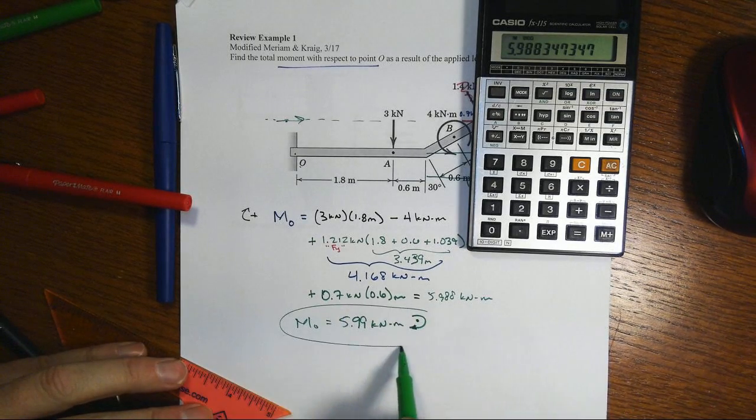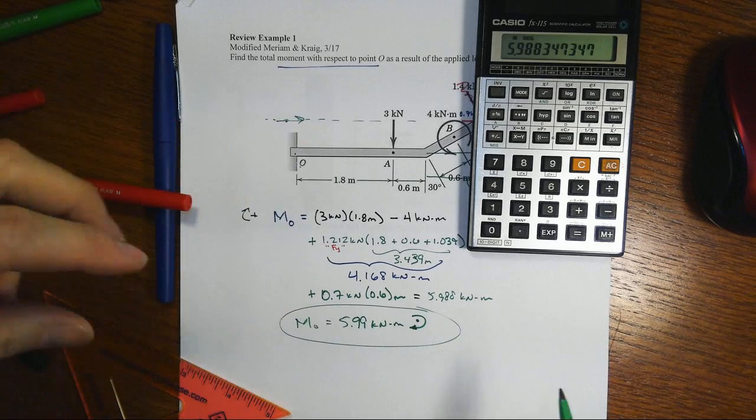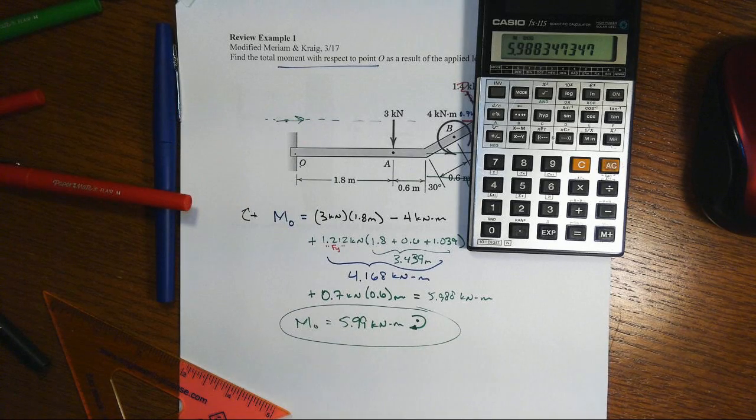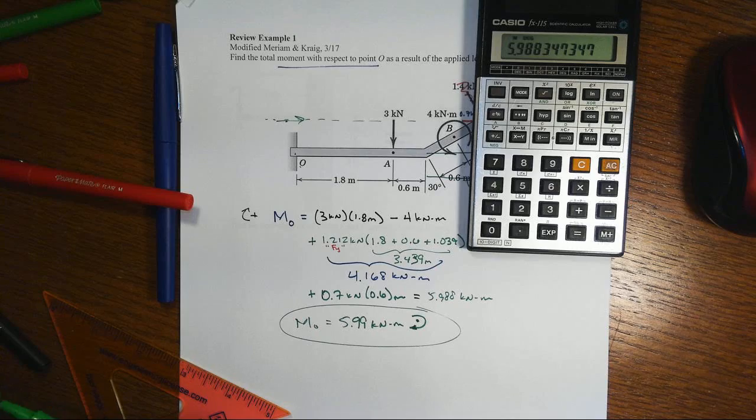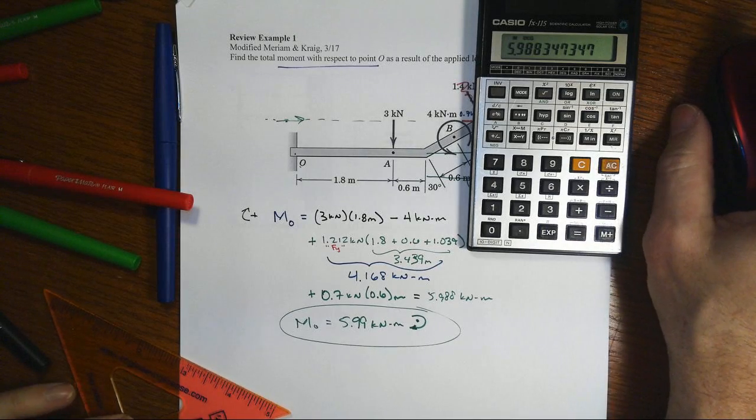Always put your sign there. That's the imposed load on the support. Of course the support itself for equilibrium would be going in the opposite direction of that if we were interested in the reaction.